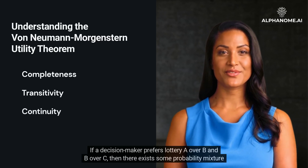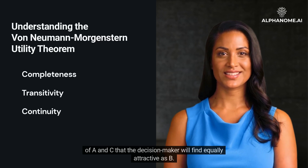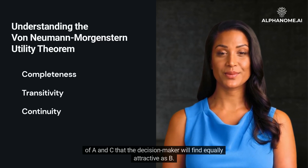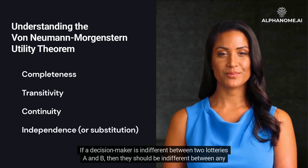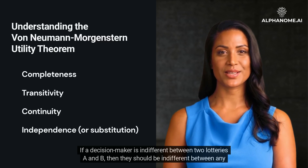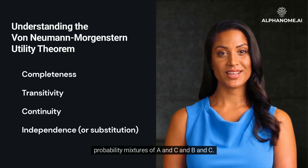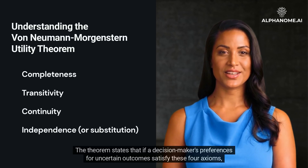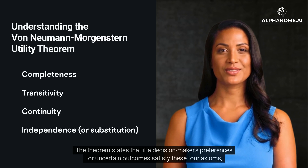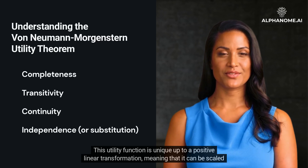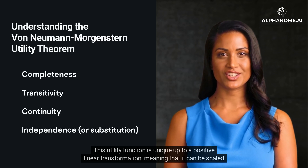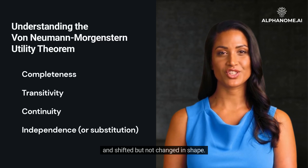Continuity: if a decision-maker prefers lottery A over B and B over C, then there exists some probability mixture of A and C that the decision-maker will find equally attractive as B. Independence or substitution: if a decision-maker is indifferent between two lotteries A and B, then they should be indifferent between any probability mixtures of A and C and B and C. The theorem states that if preferences satisfy these four axioms, there exists a utility function — unique up to a positive linear transformation — that ranks outcomes according to the decision-maker's preferences.